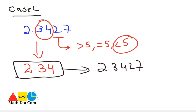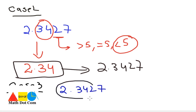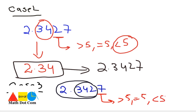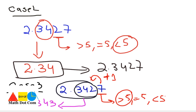We have discussed two cases. For Case 3 we have 2.3427. Now I want to keep 3 digits after the decimal, meaning I want to drop the 7. Before dropping the 7, I have to check whether the digit at this place — the 7 — is greater than 5, equal to 5, or less than 5. The digit 7 is greater than 5, so you will add 1 to the digit before it, changing it to 2.343. This is the approximate value of 2.3427.